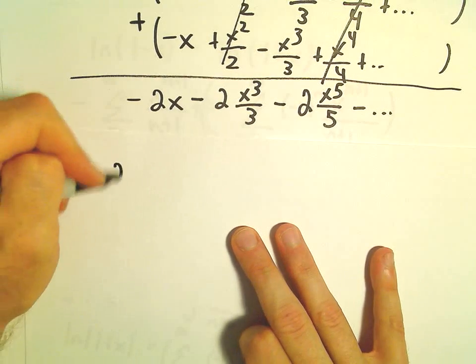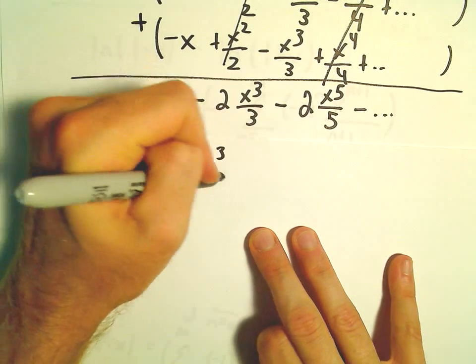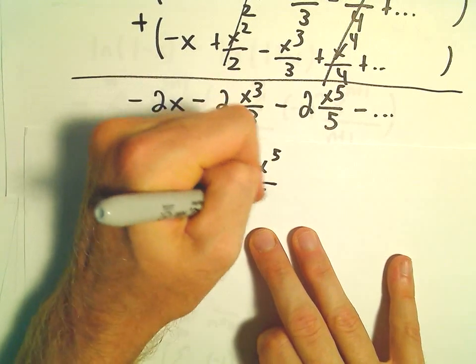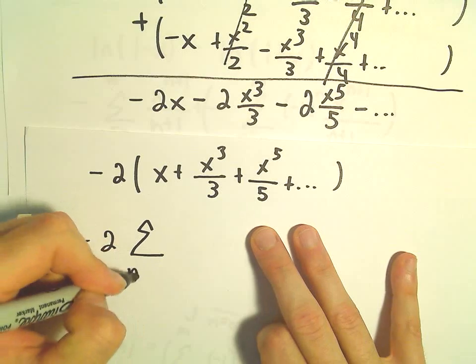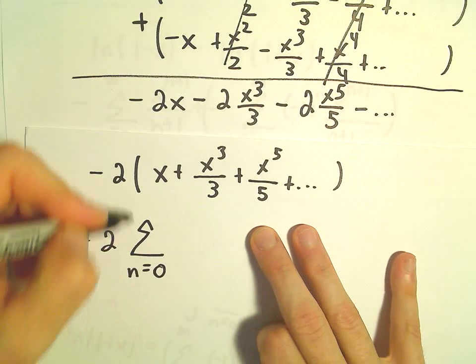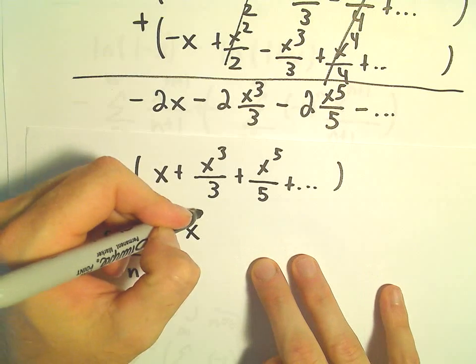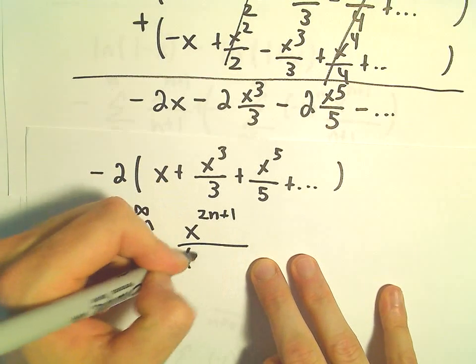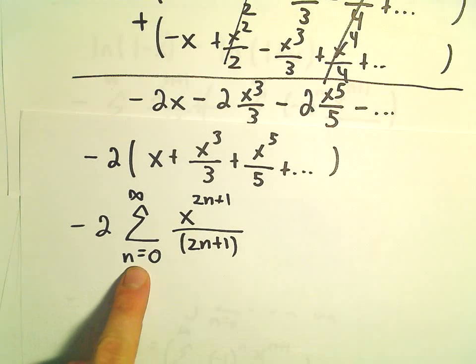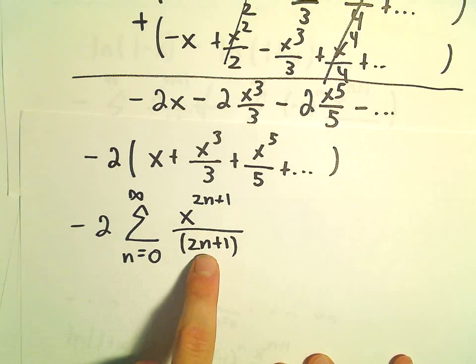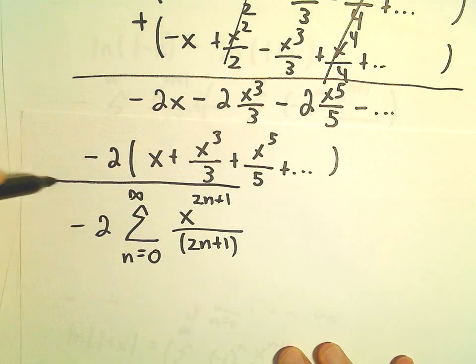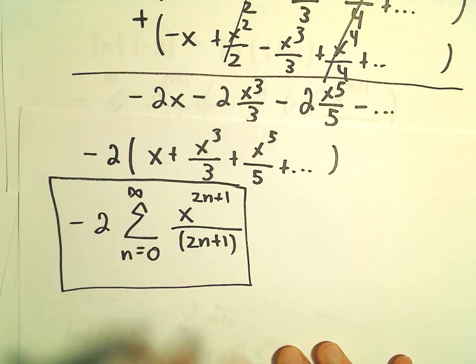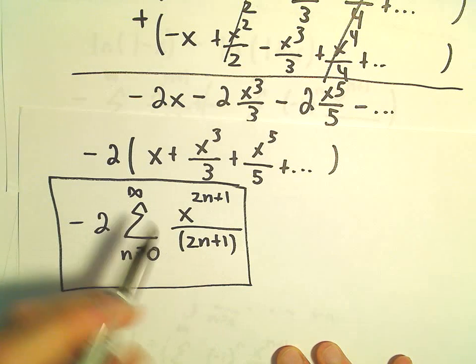Cleaning this up: we can factor out negative 2 to get negative 2 times the quantity x plus x cubed over 3 plus x to the fifth over 5, et cetera. In compact sigma notation, this is negative 2 times the series n equals 0 to infinity of x to the 2n plus 1 over 2n plus 1. When n equals 0 we get x over 1; when n equals 1 we get x cubed over 3, and so on. This is our nice compact series representation for the original function.